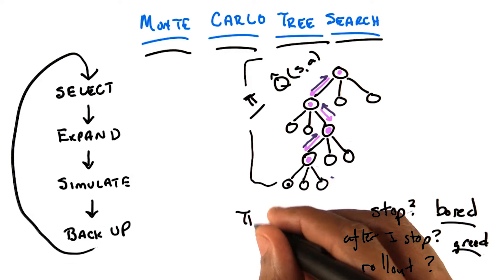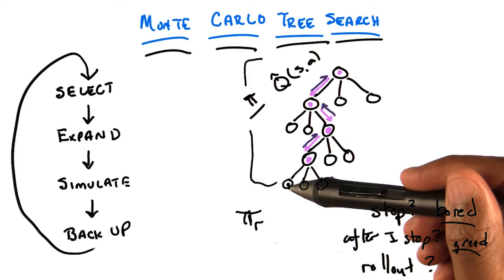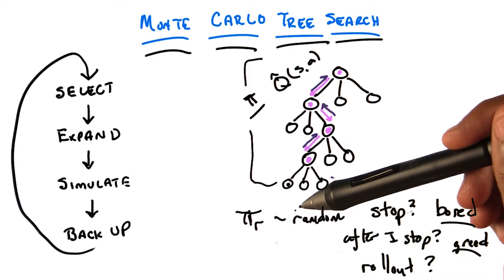What were you thinking? Well, I was just thinking that we have some rollout policy which tells us what to do when we're here. And I said, well, let's just act randomly. But I don't know why that's the right thing to do.